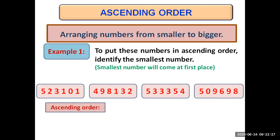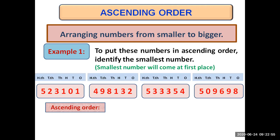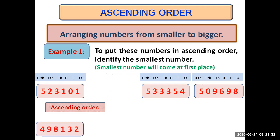For example, we have four six digit numbers to put in ascending order. We need to identify the smallest number because it will come at first place. We mention the place values and start comparing from 100,000 place. We see that the second number, 498132, has four at 100,000 place, which is smaller than the rest — all three have five. So four is smaller, meaning that number is the smallest and comes at first place.